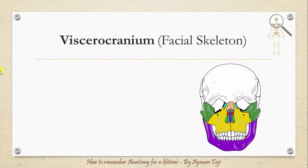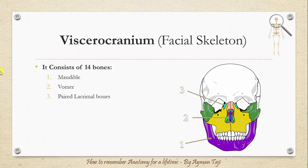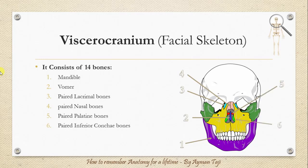The viscerocranium, which consists of bones of the face that develop from the pharyngeal arches in embryologic development, includes the following 14 bones: the mandible, the vomer, paired lacrimal bones, paired nasal bones, paired palatine bones, paired inferior conchi bones, paired maxillary bones, and paired zygomatic bones.